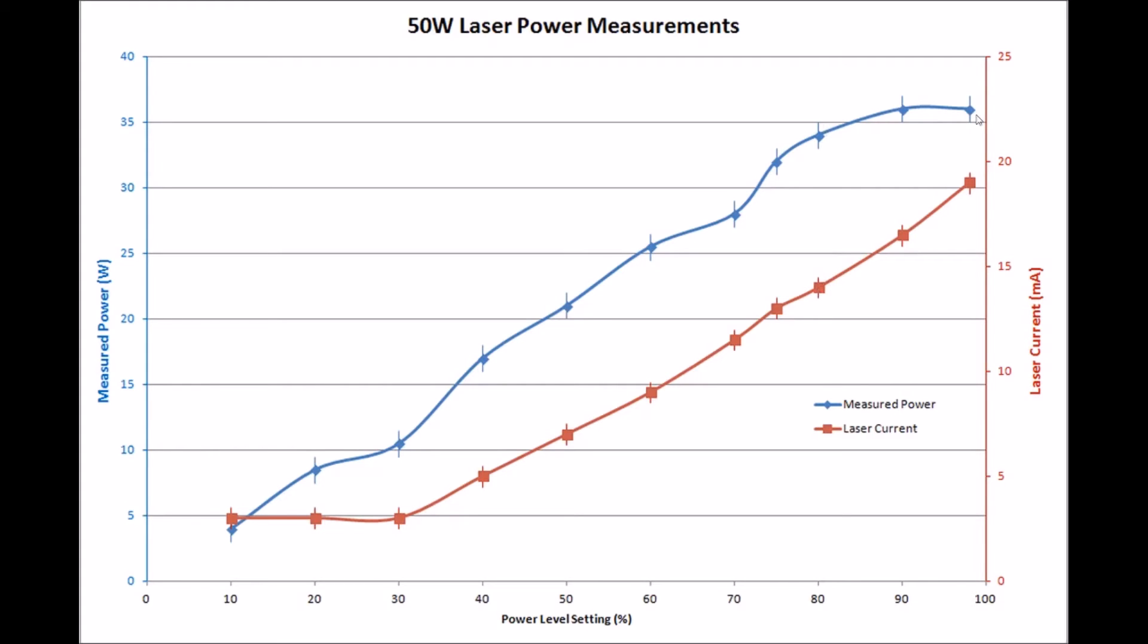Whereas if I increase the power level setting to 90-98%, I'm putting around 18 to 19 milliamps in, which puts a lot more strain on the tube for no actual power gains.